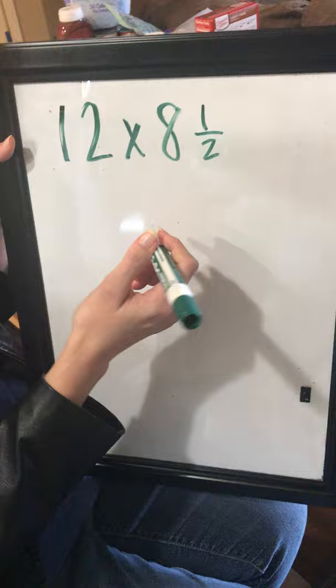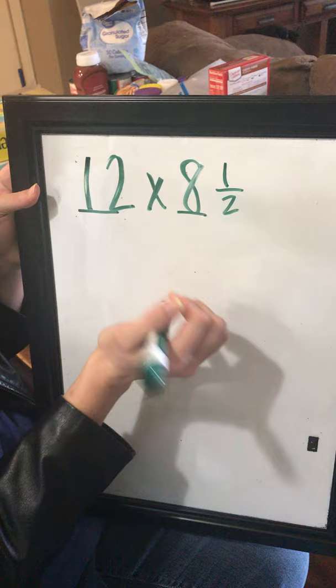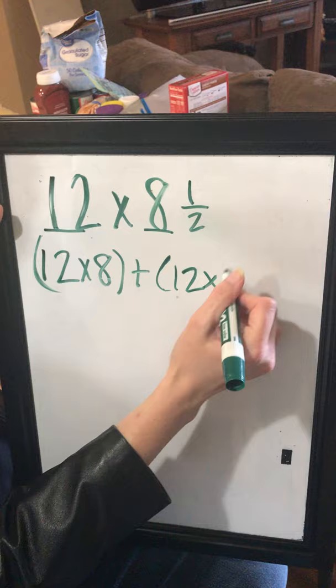I'm going to multiply the whole number by the other whole number, and then the whole number by the fraction. So I've got a whole number times a mixed number. To start out, I'm going to multiply 12 times 8, and then 12 times a half.